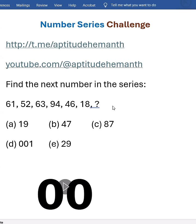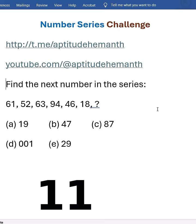Hello everyone, let us solve this tricky question from number series. Timer is on now. Let me see how many seconds you people have taken to solve the question. Once you have solved this question, post your answer along with your time taken in the comments. Find the next number of the series. The series looks like 61, 52, 63, 94, 46, 18. What's the next number?